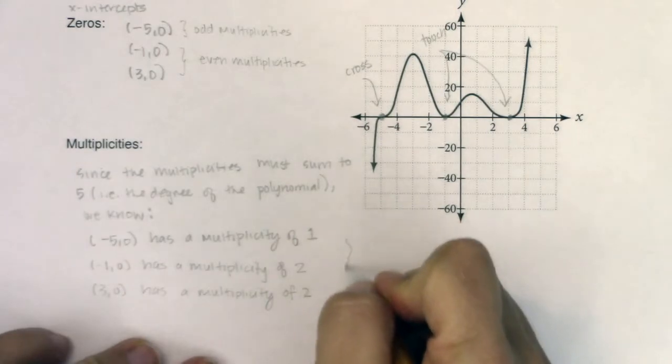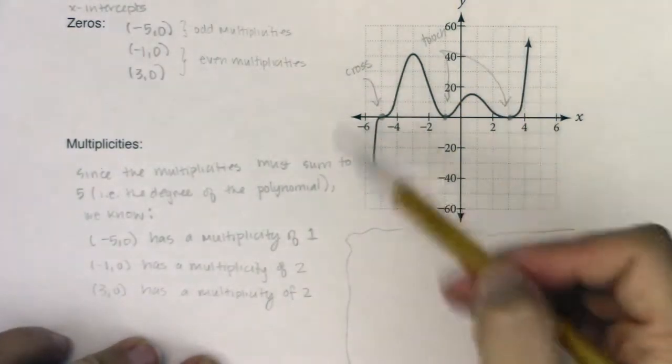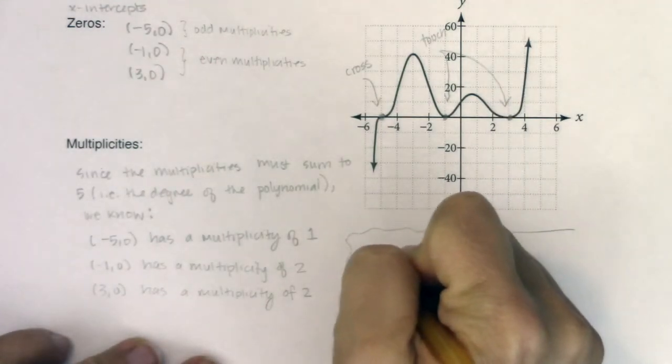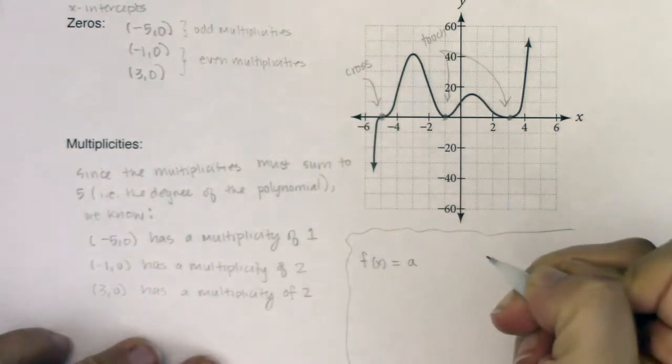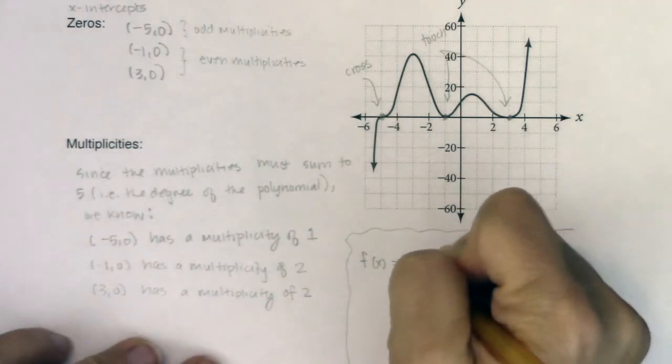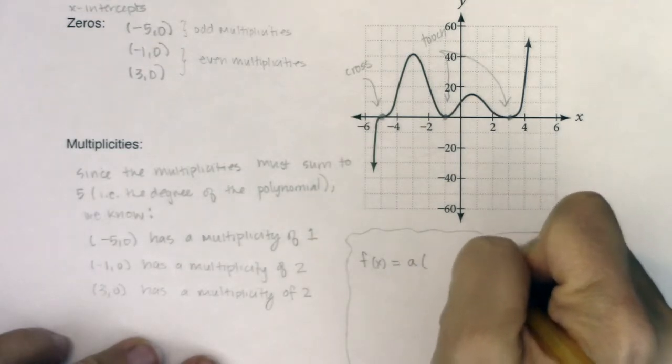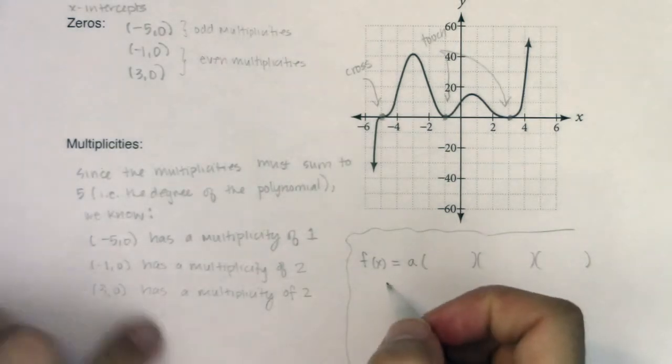But I want to extend on this just a little bit further. I want to talk about how this would affect the equation. So if I gave you this graph, you could actually get me a pretty solid equation for what this function is equal to. We could say f(x). I'm going to put a little a here, a little constant, because I don't know what the coefficient, the initial coefficient would be, but I do know three factors that are involved in this polynomial.